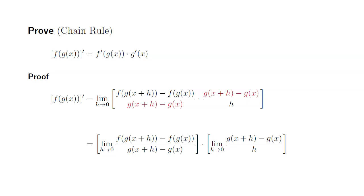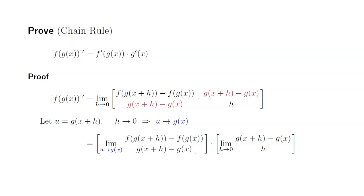All right, to make it look a little bit nicer, I'm going to make the following substitution. I'm going to let u be g of x plus h. So as h approaches 0, we can see that u approaches g of x. So I'm going to replace h approaches 0 by u approaches g of x, like this. Then I'm going to replace g of x plus h by u, like that.